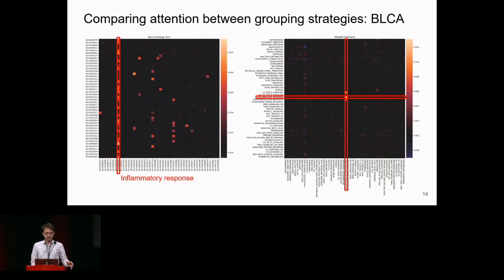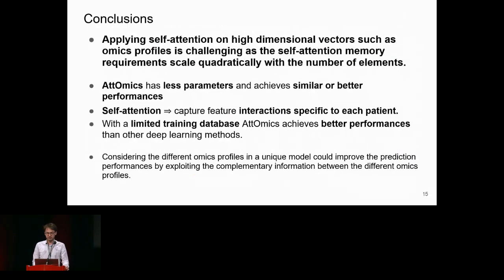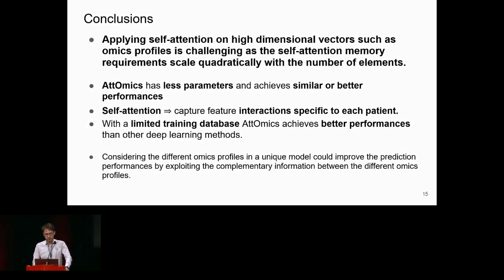In summary, applying self-attention on high-dimensional omics profiles is challenging due to quadratic memory requirements. Grouping similar features together produces an architecture with fewer parameters that achieves similar or better performance than other deep learning approaches. Using self-attention, we can capture interactions specific to each patient, and even with limited training data we achieve better performance. The next step is to consider interactions between all omics modalities to exploit their complementary information and redundancy to further improve network performance.